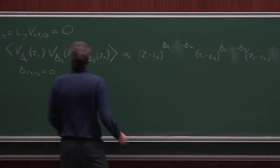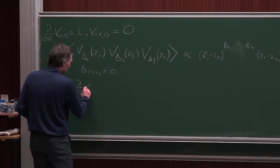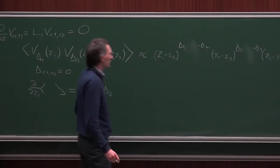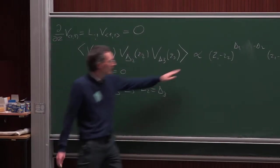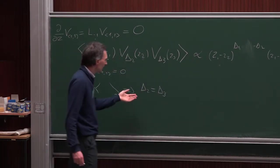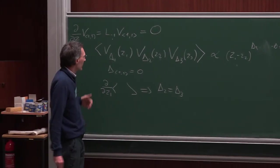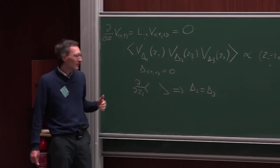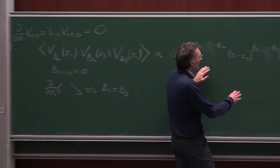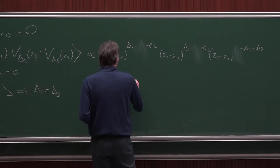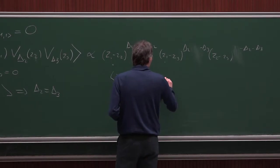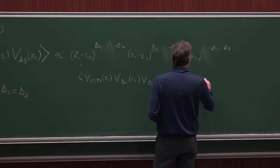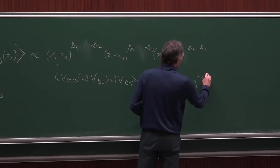To make it z₁-independent, we need δ₂ to equal δ₃ so that those two factors disappear. Unless the proportionality factor is zero, we need δ₂ = δ₃. That's an additional constraint. Essentially, V₁₁ behaves as an identity field — a field which does not modify the correlation function — because after imposing δ₂ = δ₃, we recover the two-point function of Vδ₂ and Vδ₃.